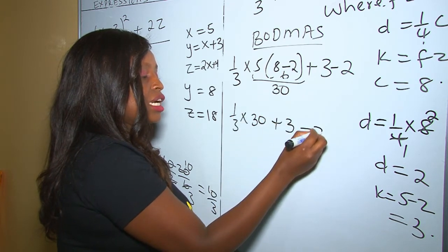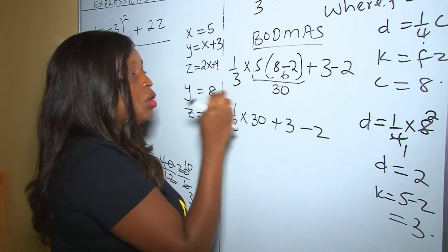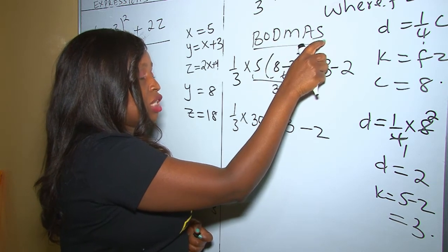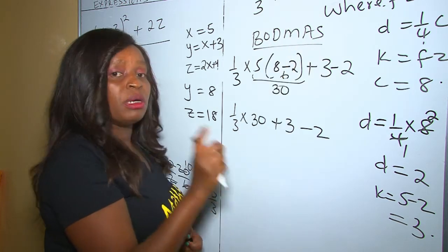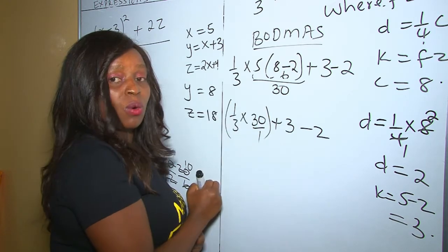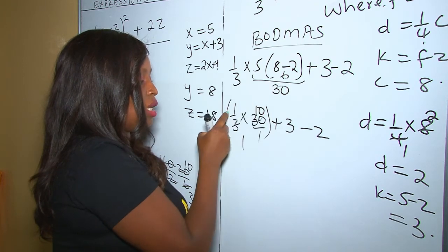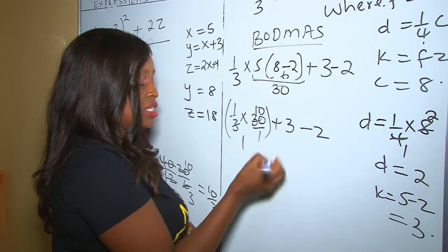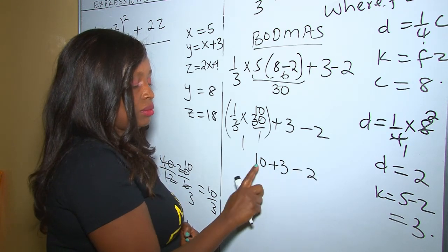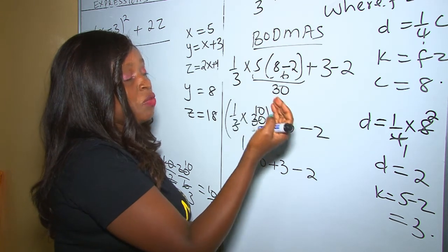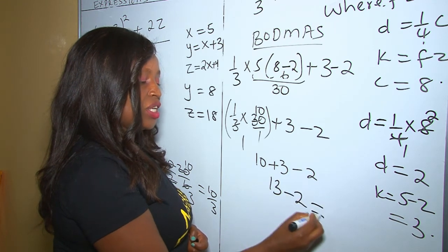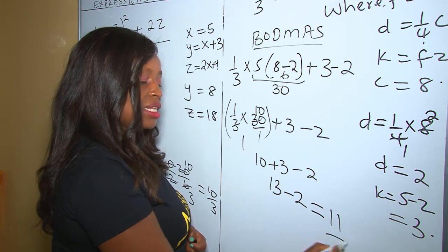Add 3, take away 2. The next order of operation is multiplication, which comes before addition and subtraction. So one-third times 30: 30 divided by 3 is 10, times 1 is 10. So we have 10 plus 3 take away 2. Next is addition: 10 plus 3 is 13. Then 13 take away 2 is 11. The answer is 11.